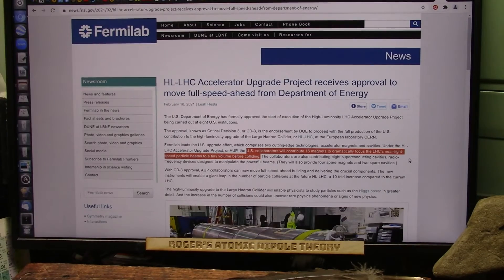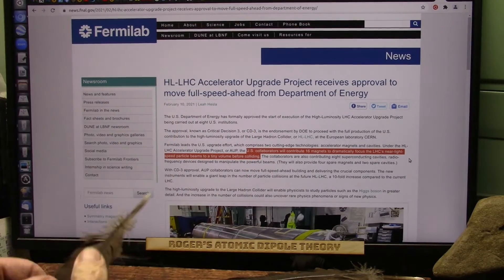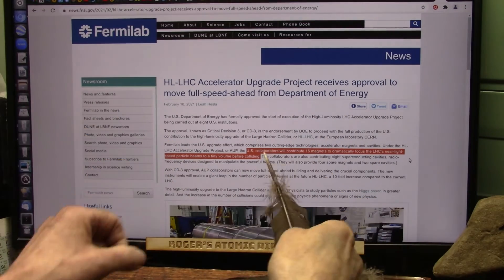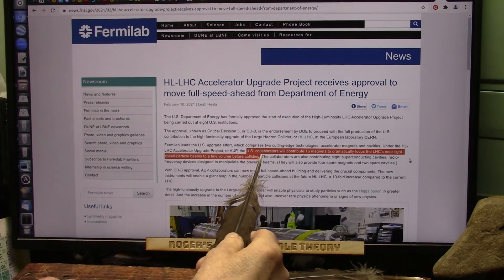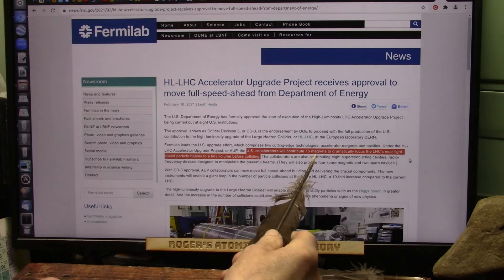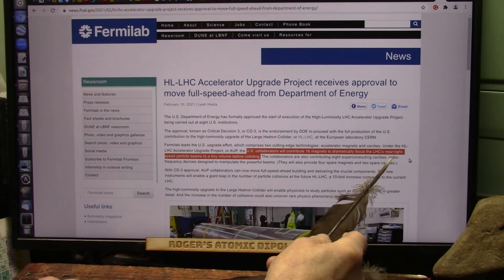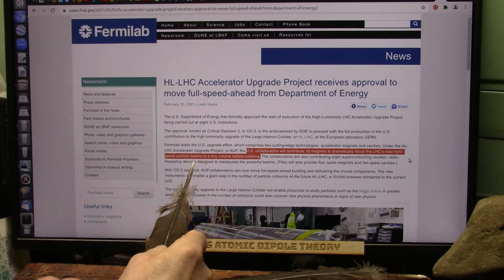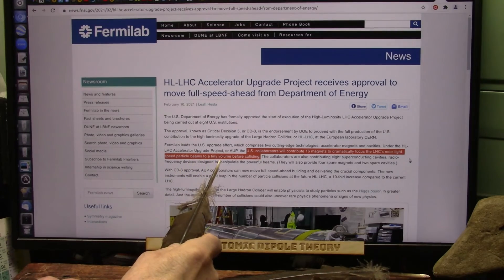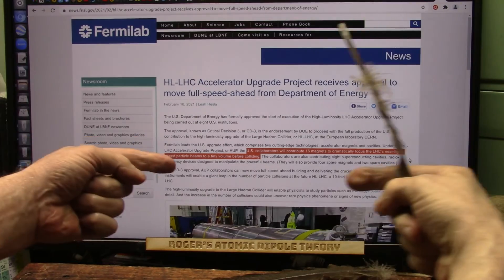This is where I mentioned that Don Lincoln at Fermilab, that they should make them focus. And sure enough, U.S. collaborators will contribute 16 magnets to dramatically focus LHC near light speed particle beams to a tiny volume before colliding.